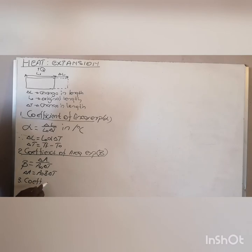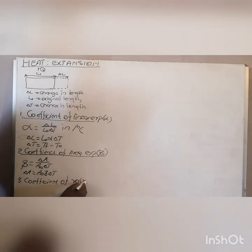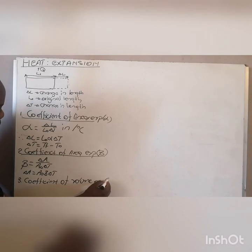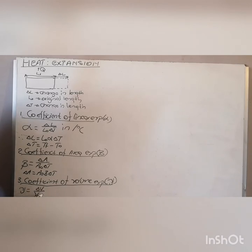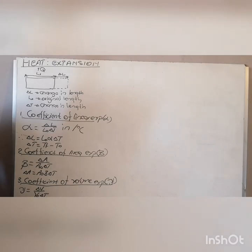The last coefficient is the coefficient of volume expansion. For this material you are looking at volume — your three dimensions, your three sides. For your volume expansion, it is the change in volume per original volume per change in temperature. Therefore, making your change in volume the subject of the formula gives: change in volume = original volume × coefficient of volume expansion × change in temperature. So these are your three equations and three definitions.